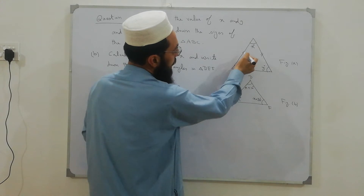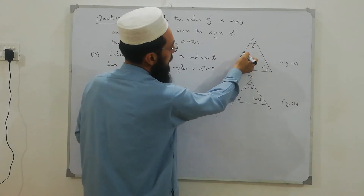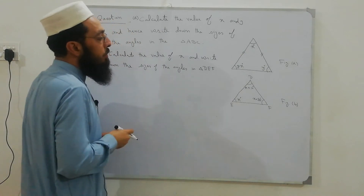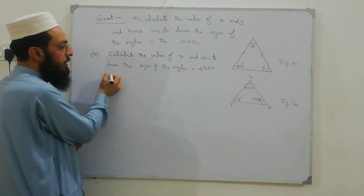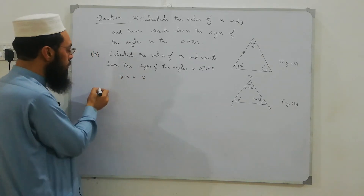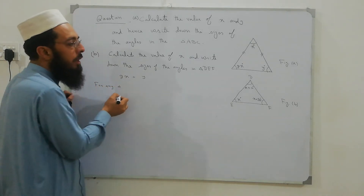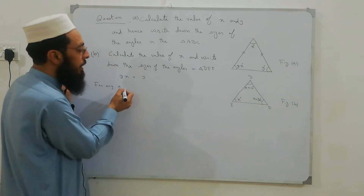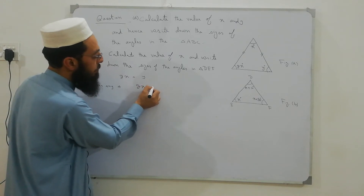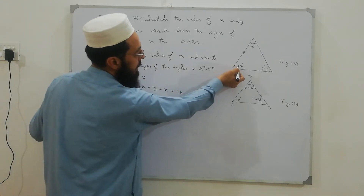Figure A is given, which is an isosceles triangle in which this side is equal to this side. From the isosceles triangle, the opposite angles to the equal sides are equal, so 2x is equal to y. Also, we know that for any triangle the sum of interior angles is equal to 180 degrees.